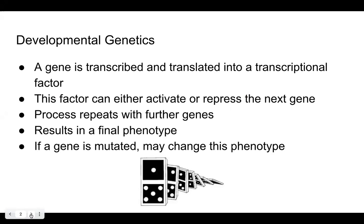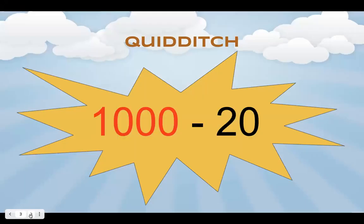You can see why if you disturb one of these genes through a mutation in this orderly process, this can cause a chain reaction, ultimately changing the final phenotype in the end. So in this video, we can use an analogy to describe this process using the sport Quidditch in Harry Potter.